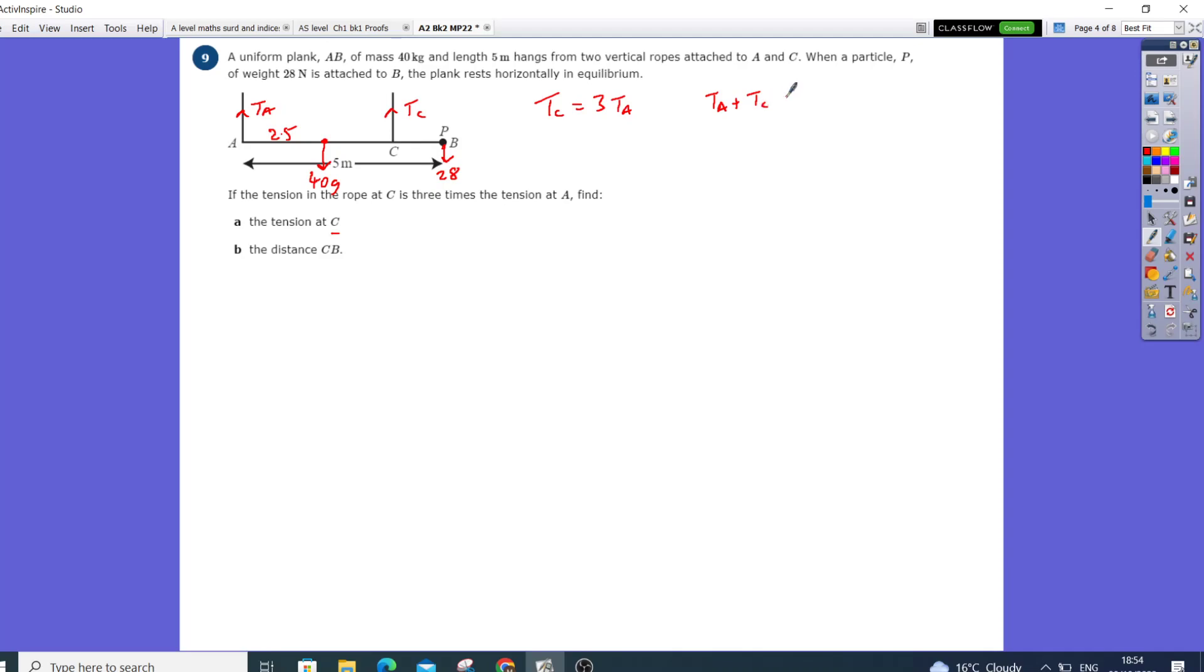Since TC is three times TA, that's TA and 3TA, which equals 392 plus 28. So that's going to give me 4TA, which equals 420 newtons.